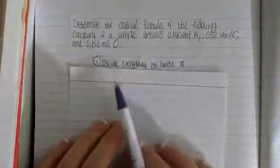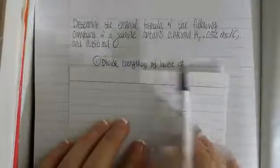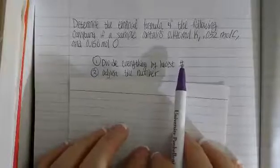Alright, first, divide everything by the lowest number. Second, adjust the number if possible.